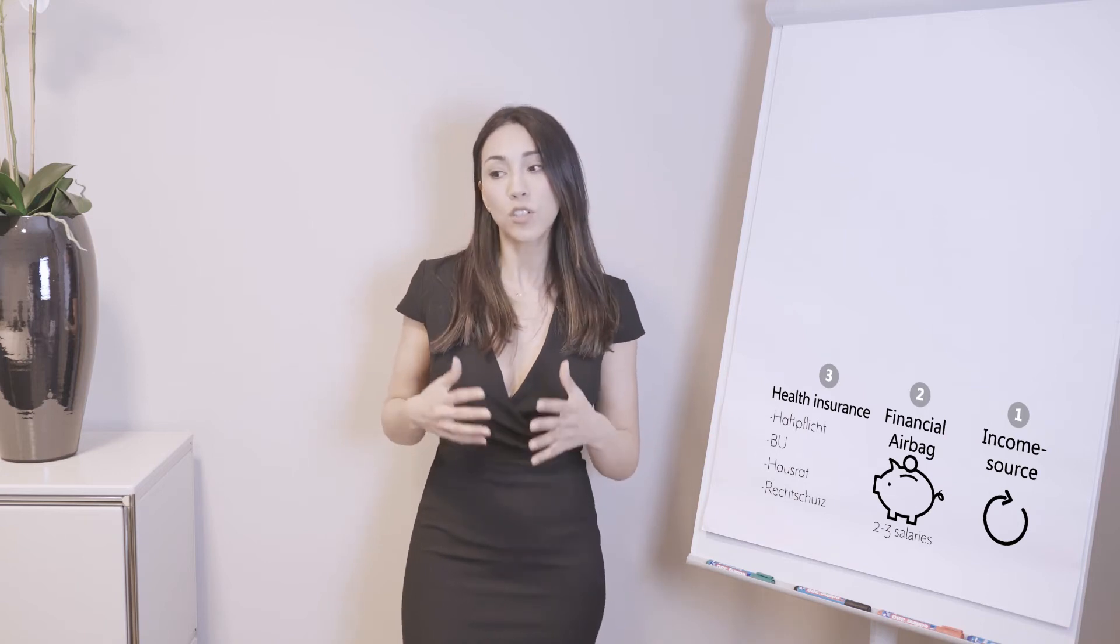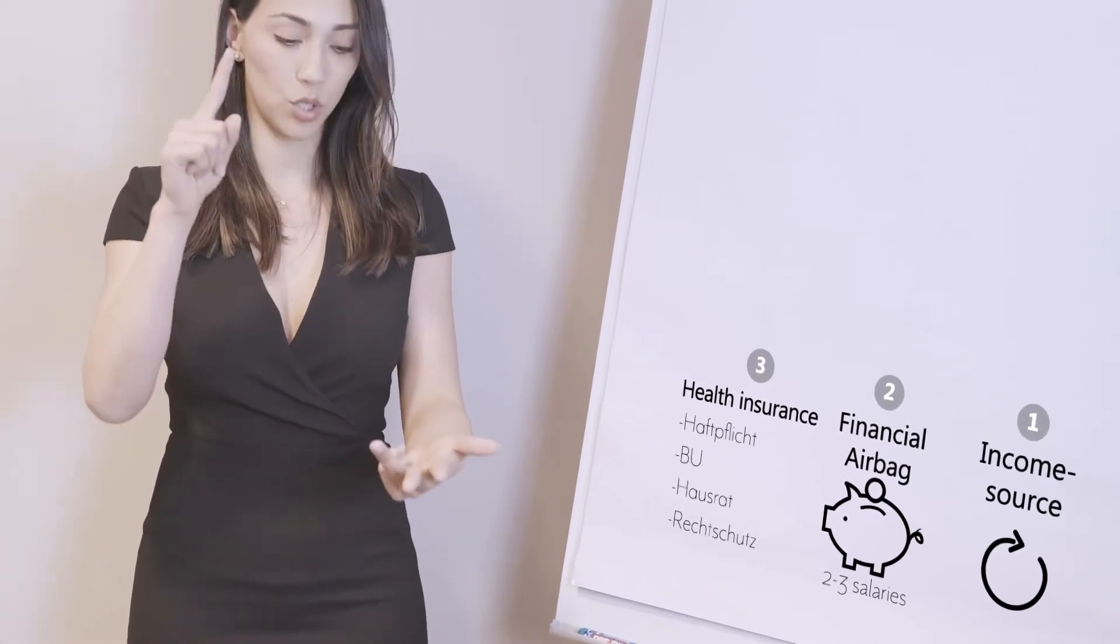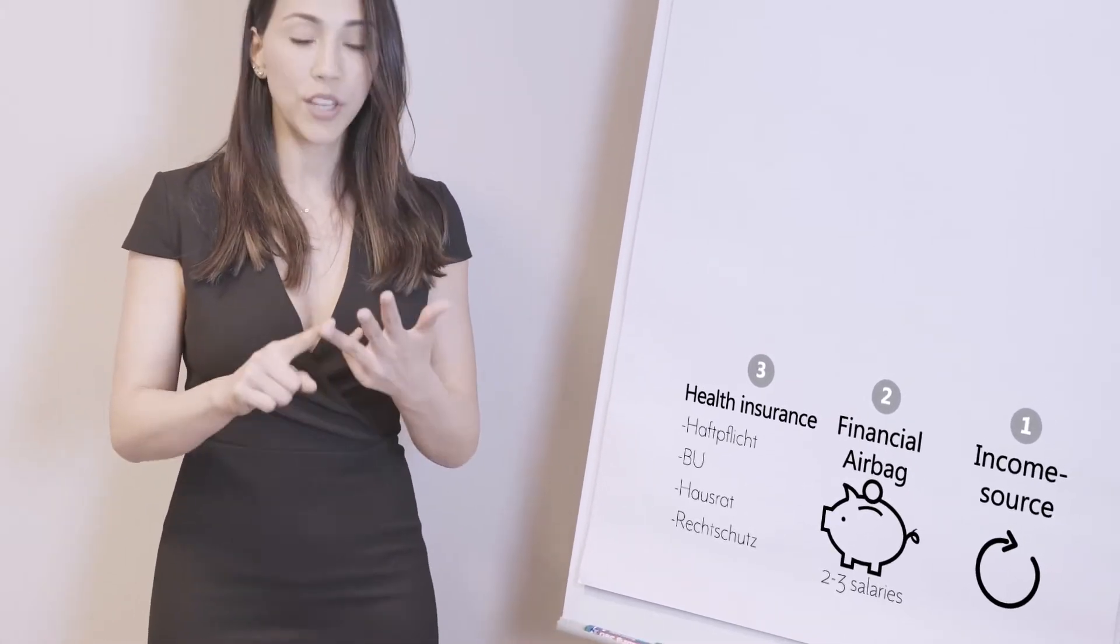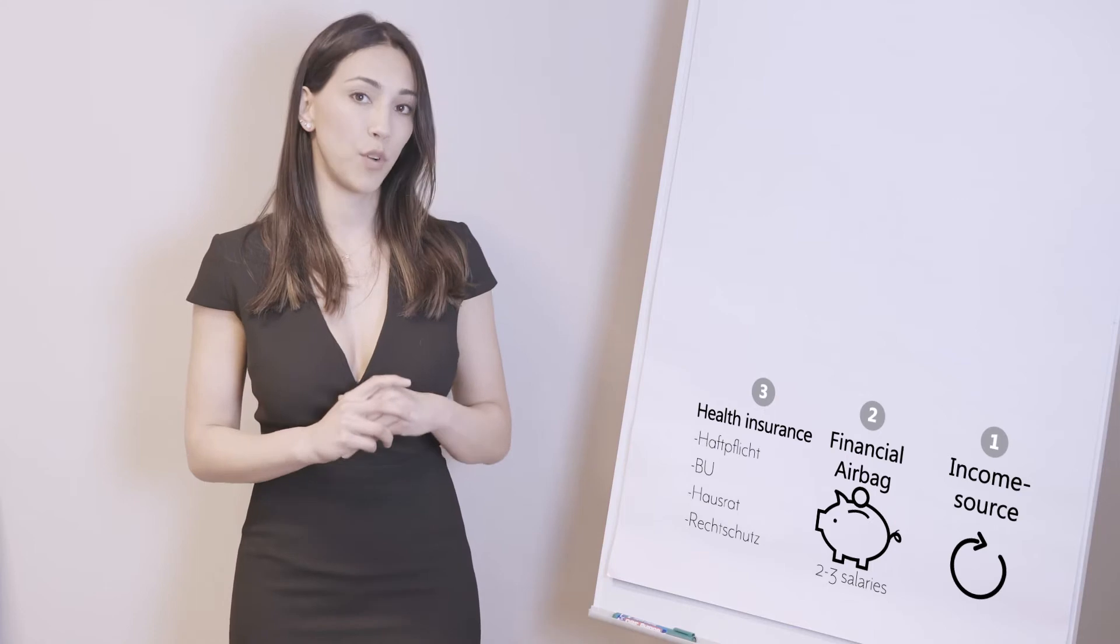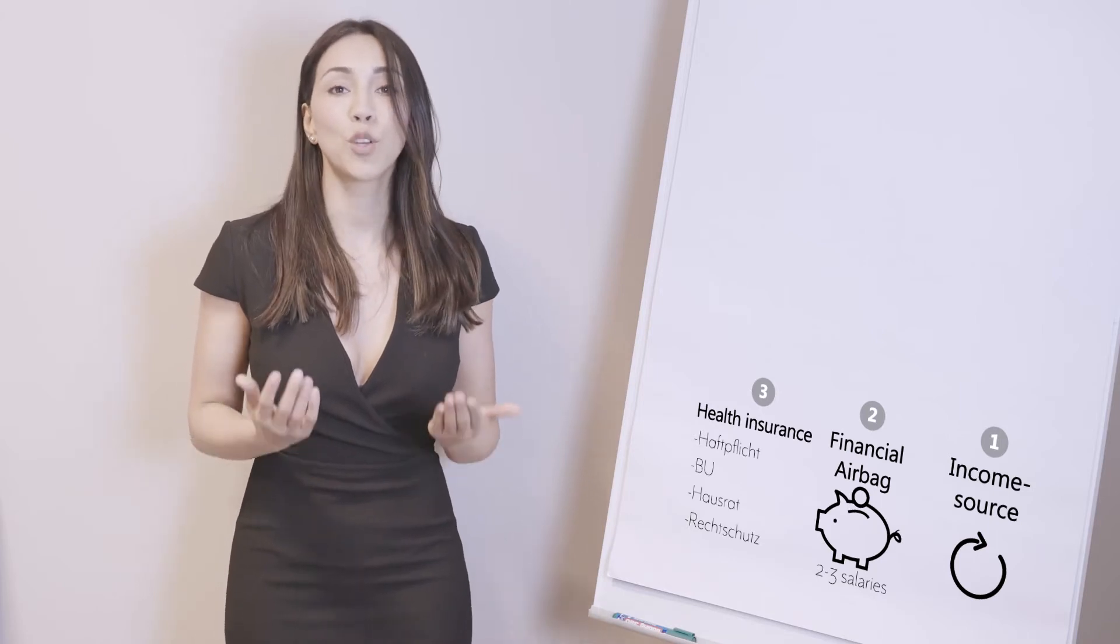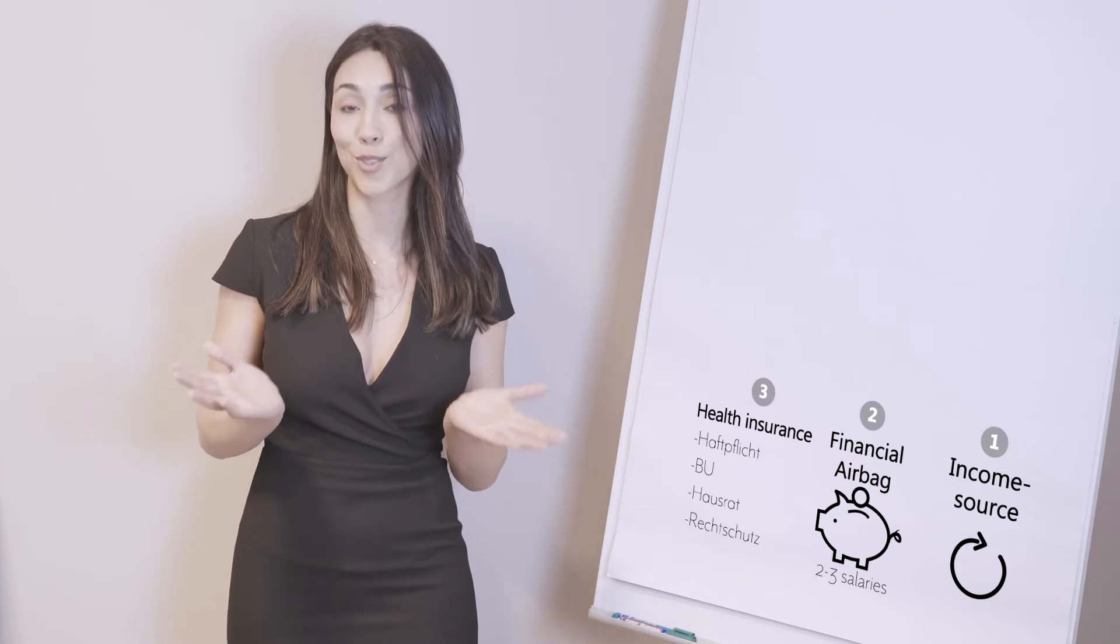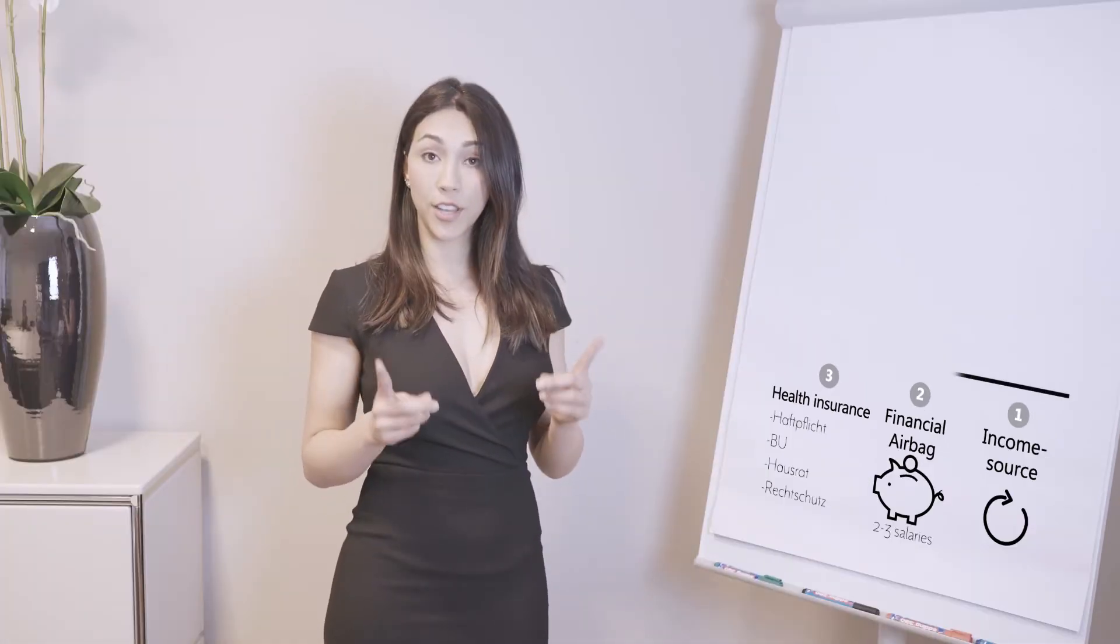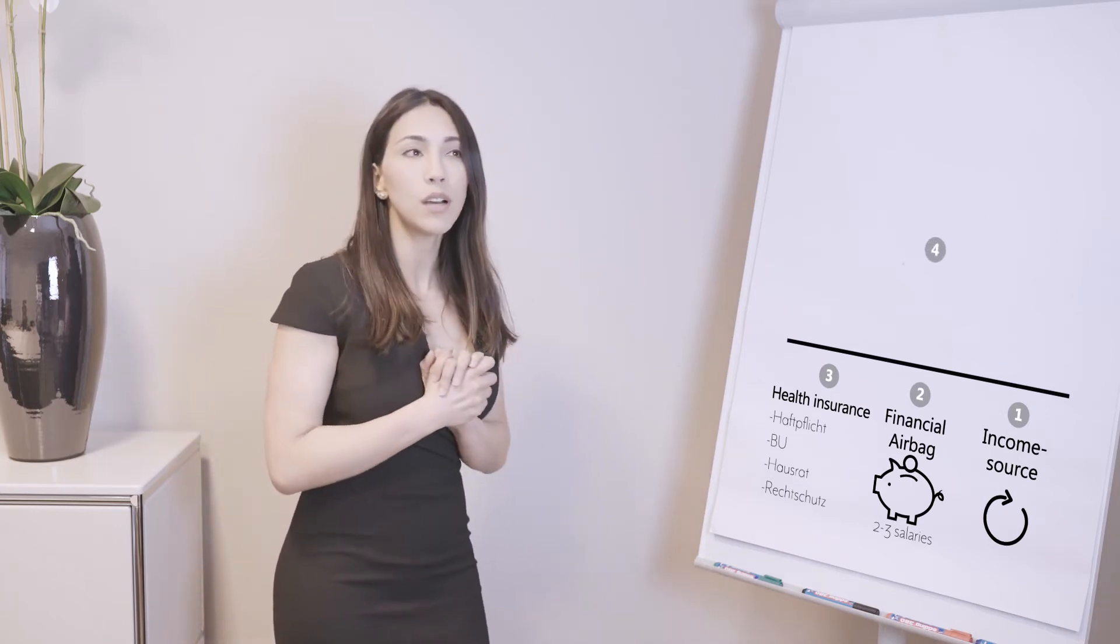And we have Sachversicherung, means Haftpflicht, Hausrat, Rechtsschutz, Kfz - all the insurances that insure your property. Here again, it's very important to know your personal situation and of course what is important to you, what you want to insure. So here again, super important to have a professional consultation. Once you took care of your base, you can go one step up.